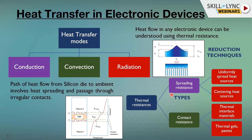Let's first discuss spreading resistance. In this diagram, we have a heat source of smaller area dissipating heat into a larger area, which may or may not be connected to a heat sink. The key point is that when heat goes from the source to the spreader, the tendency of heat is to flow in the z-direction. However, what is desirable is that the heat spreads uniformly.